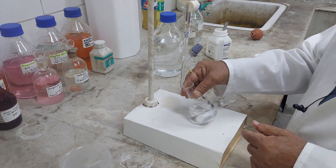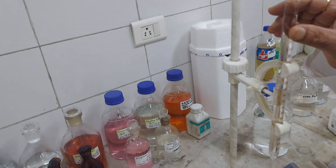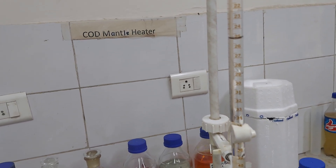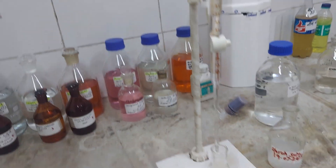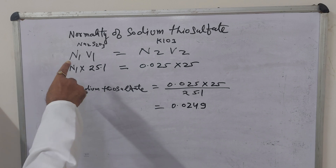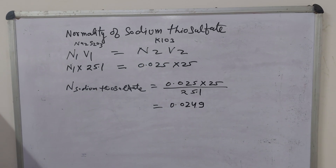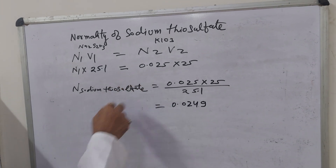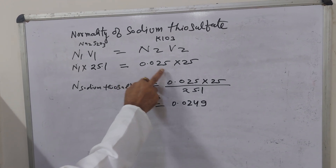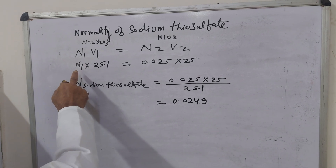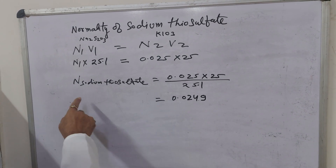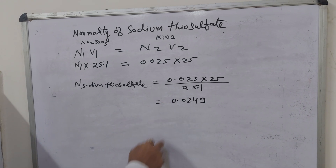The solution is now colorless. The reading is 25.1 ml of sodium thiosulfate for 25 ml of potassium iodate. For the calculation of normality of sodium thiosulfate, using N1V1 = N2V2: V2 = 25 ml of potassium iodate at normality 0.025, and the titrant volume of sodium thiosulfate is 25.1 ml. The calculated normality of sodium thiosulfate is 0.0249 N.